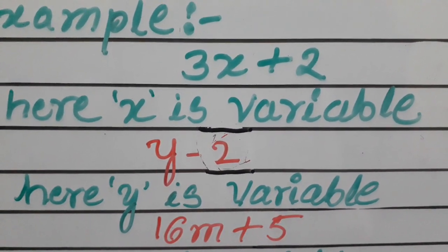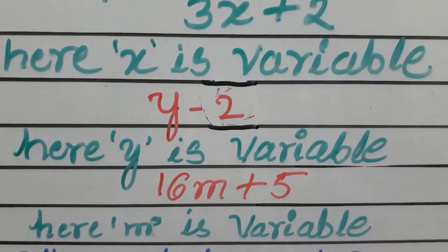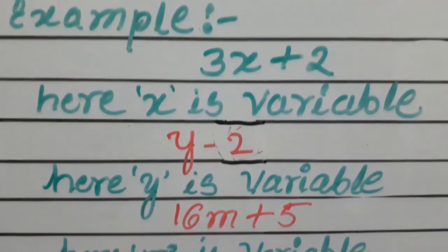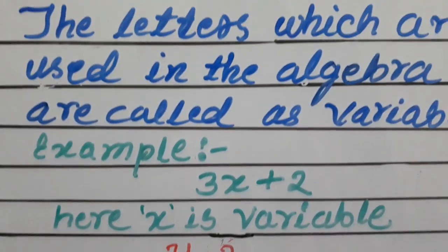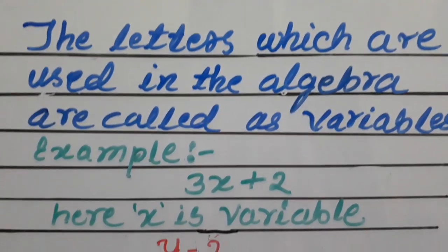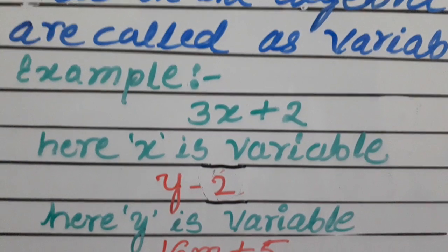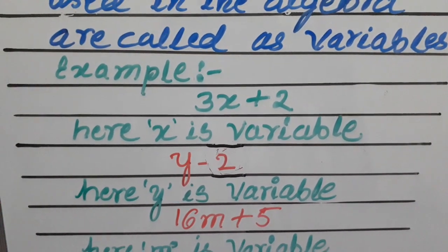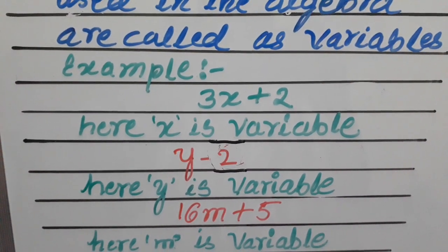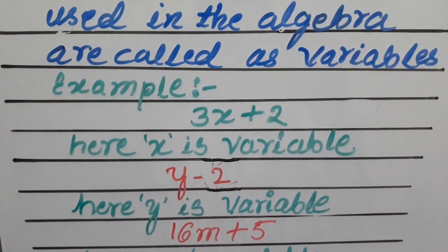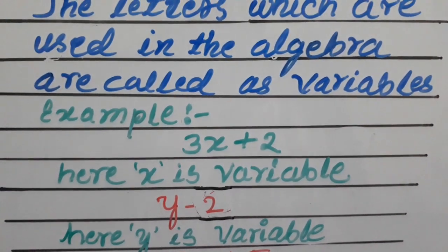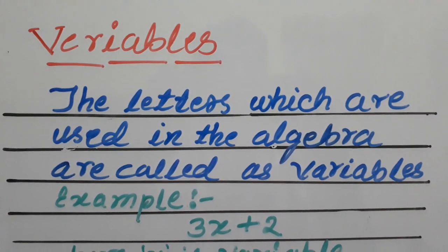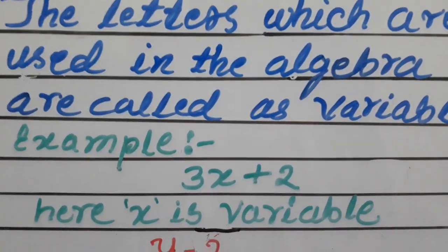Now try the third example: 16M plus 5. What is the variable? Yes, you are right — M is the variable. So in the first example we used X, in the second Y, and in the third M. These are all called variables. The letters used in mathematics, in formulas or expressions, are all called variables — their values are not fixed.